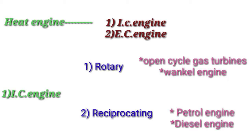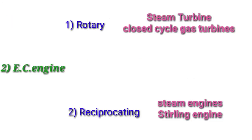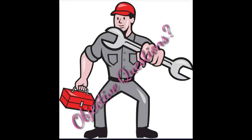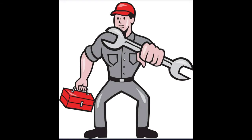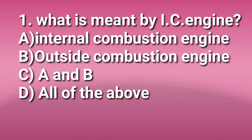Heat engine classification: internal combustion engines include rotary engines and reciprocating engines. Rotary engines include open cycle turbines. Examples of reciprocating engines include petrol and diesel engines. External combustion engines include rotary types such as steam turbines and closed cycle gas turbines, as well as reciprocating types such as steam engines and Stirling engines.